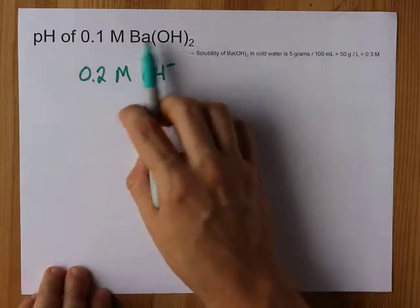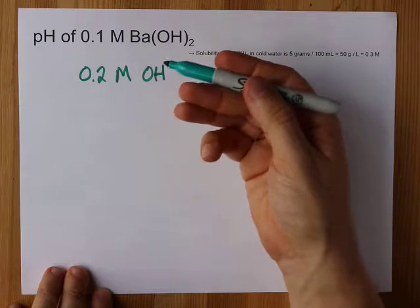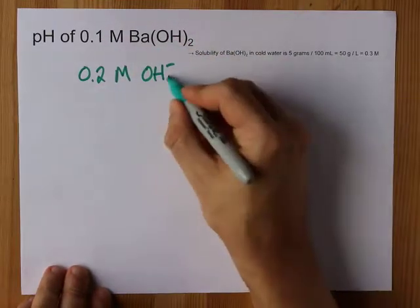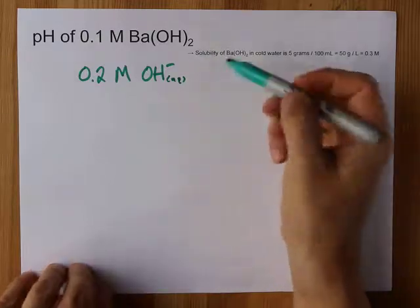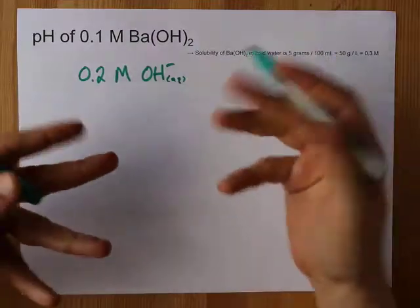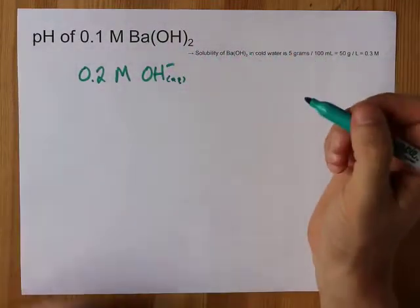An ionic hydroxide will dissolve 100% to give you OH ions dissolved in water. You just have to see how many you get from each one and watch out for tricks of things that just don't dissolve completely.